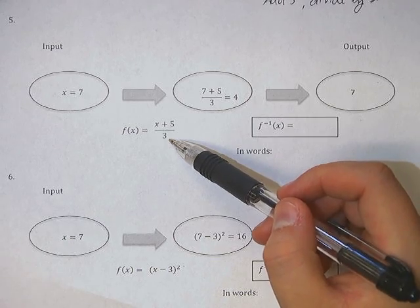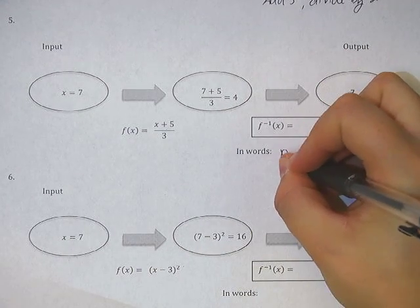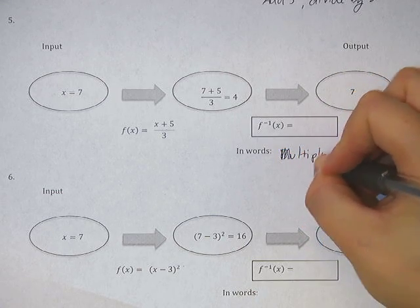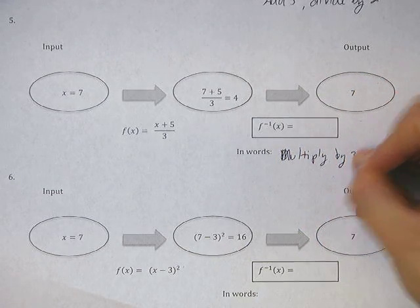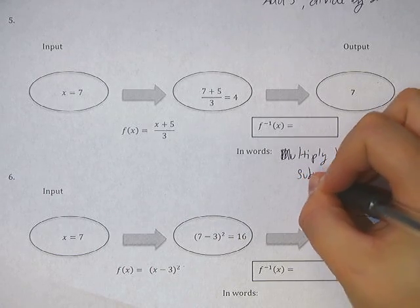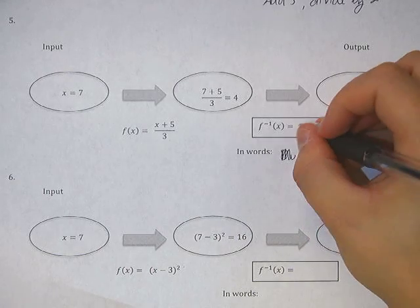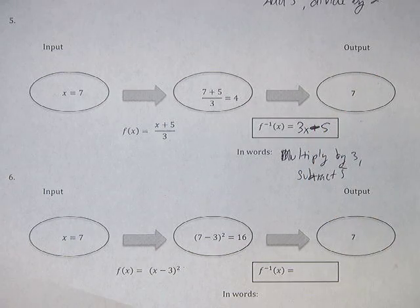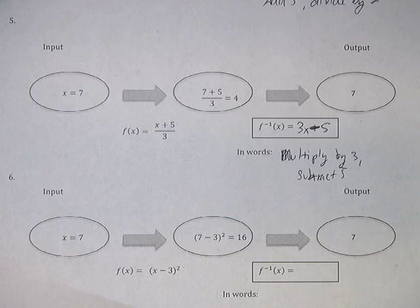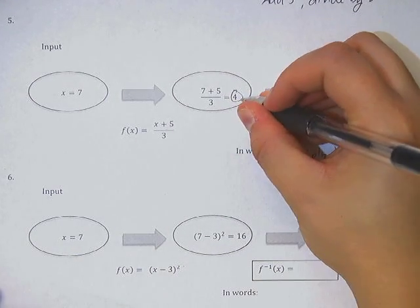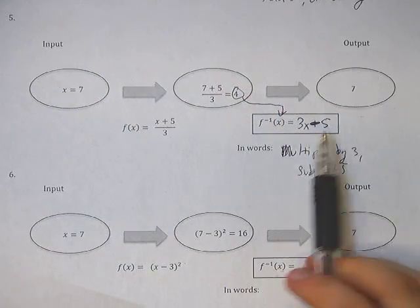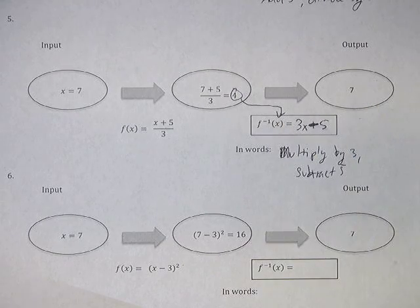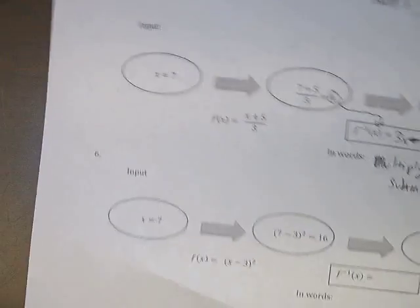Okay. Number 5. Oh, we've got more rules here. So it looks like our rule is we add 5 and then divide by 3. Which means, again, we're going to take this in reverse. Instead of dividing by 3, we're going to multiply by 3. And then subtract 5. So multiply by 3 and then subtract 5.